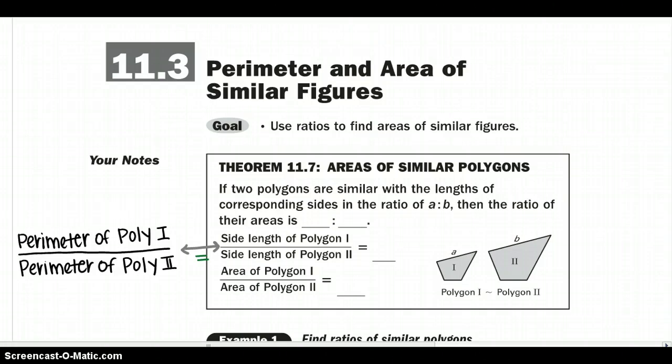Starting off with Theorem 11.7, Areas of Similar Polygons. If two polygons are similar with the lengths of corresponding sides in the ratio A to B, then the ratio of their areas is just A squared to B squared.